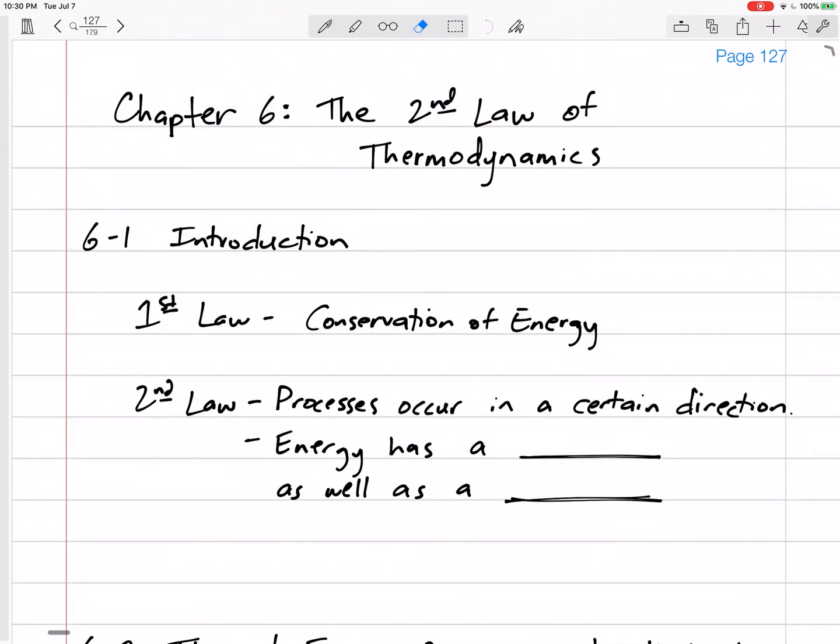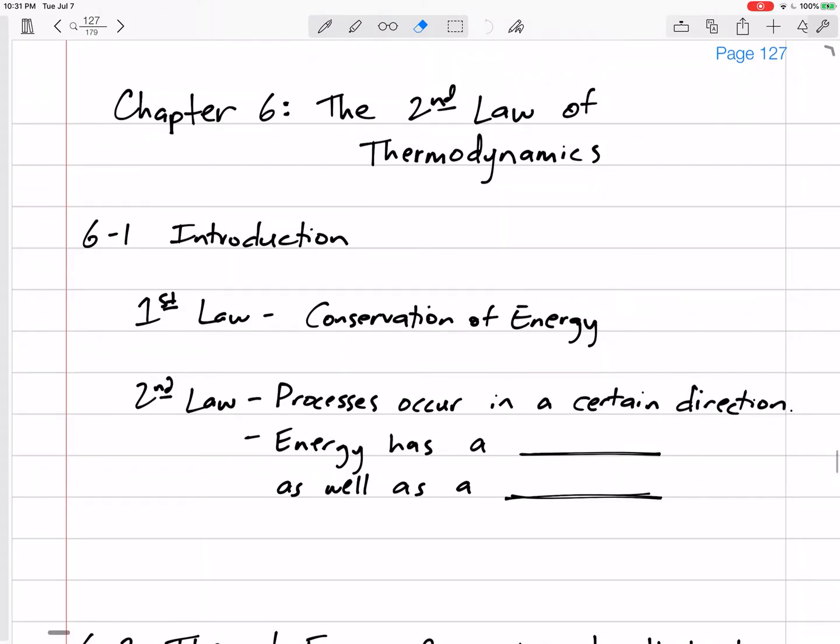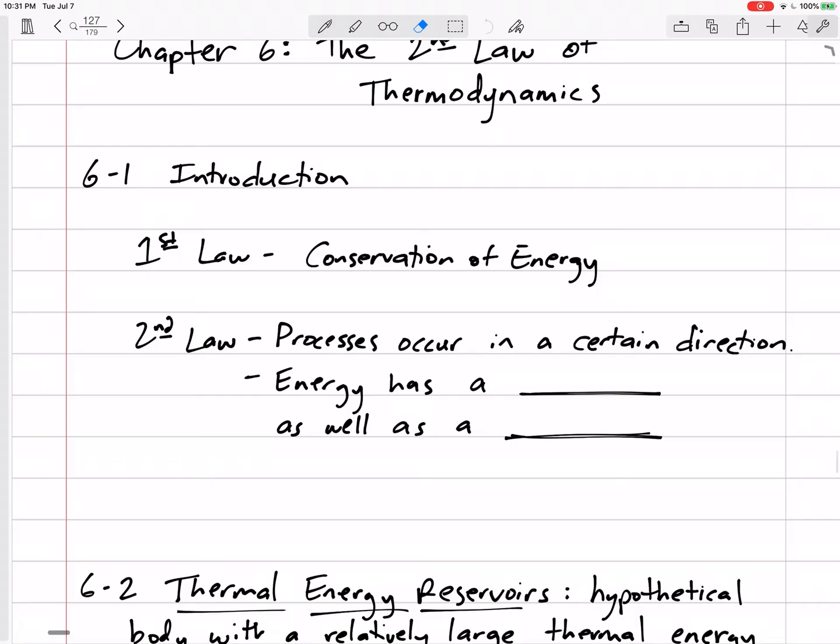Alright, so we're moving on to Chapter 6, which is the Second Law of Thermodynamics. The first law of thermodynamics was conservation of energy. The second law is about entropy. It says that the entropy of the universe is always increasing. Let's not get into the weeds of entropy until Chapter 7. Let's just say that the second law shows us that processes occur in a certain direction.